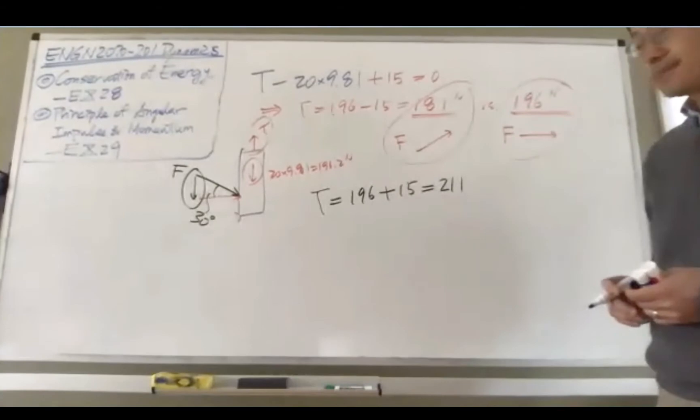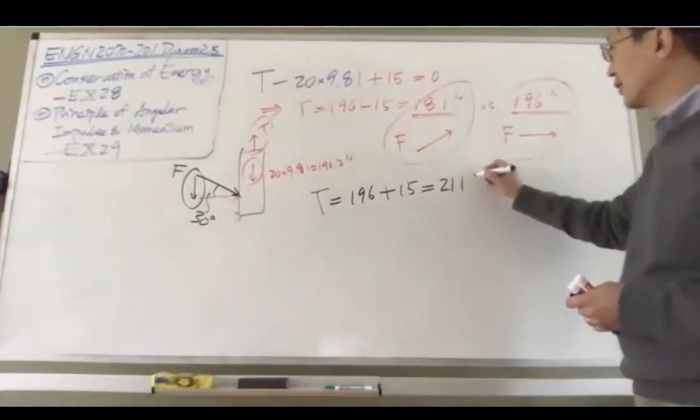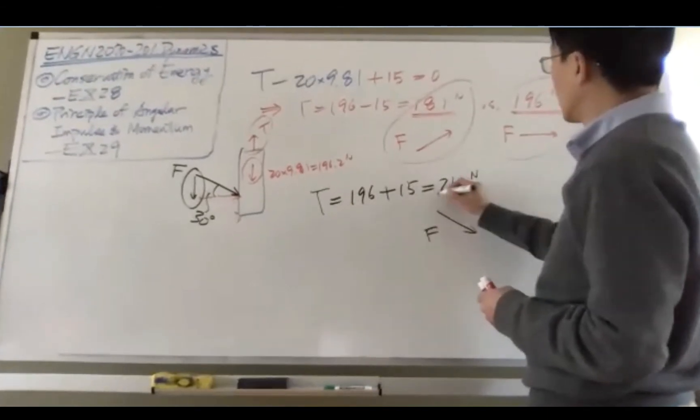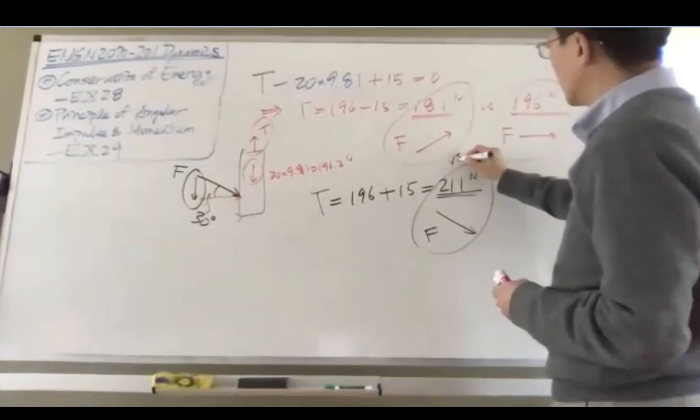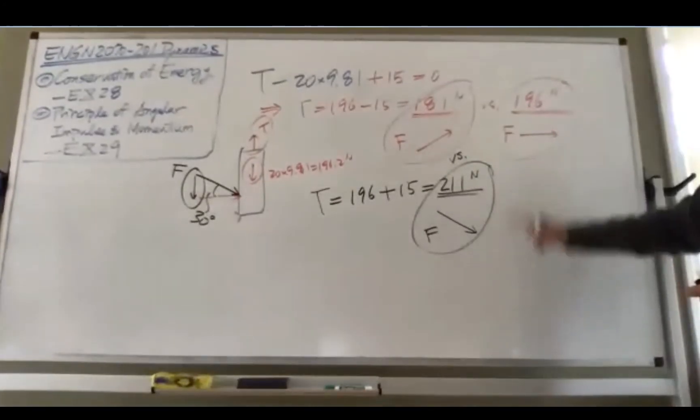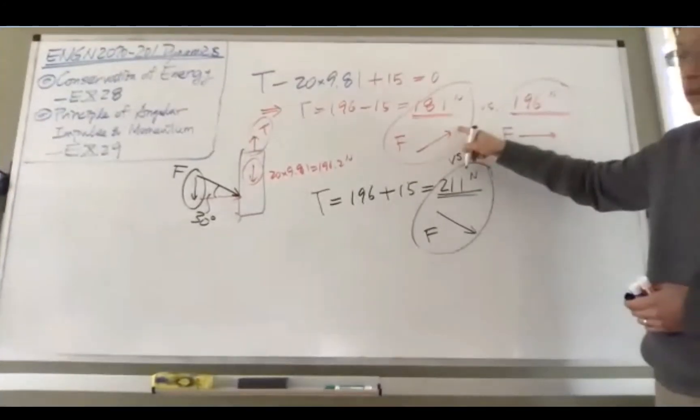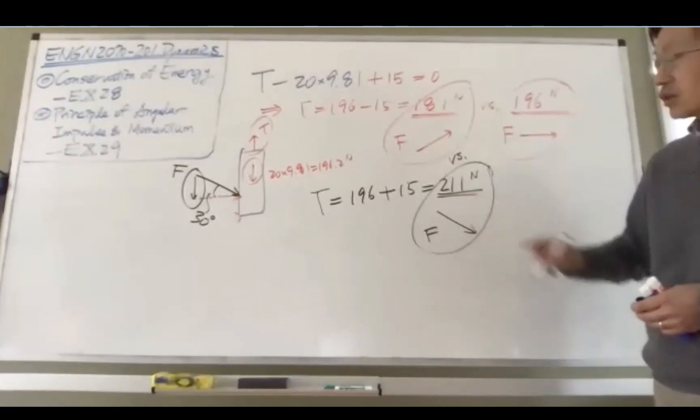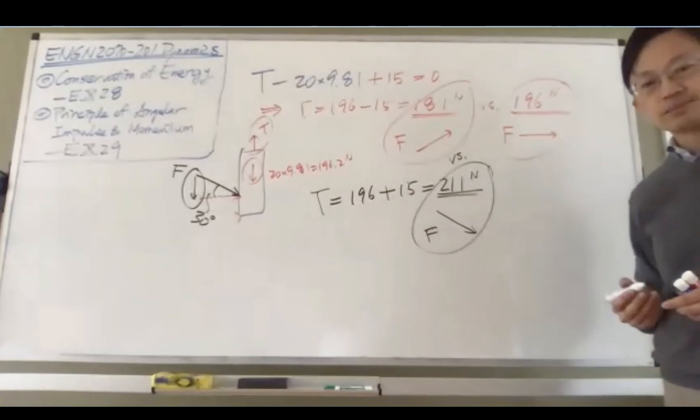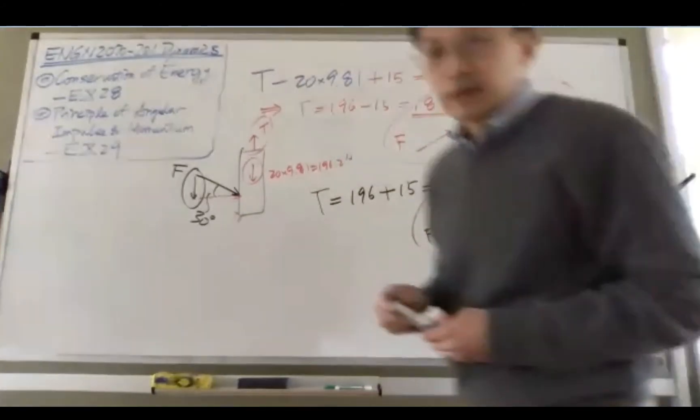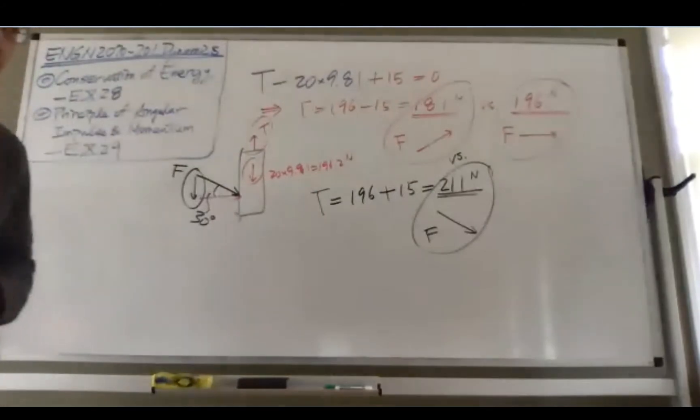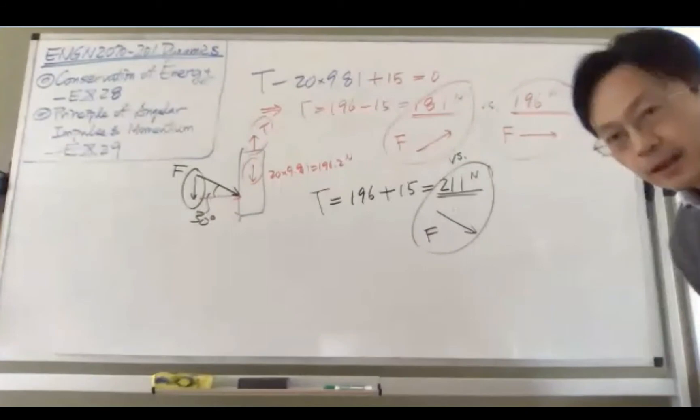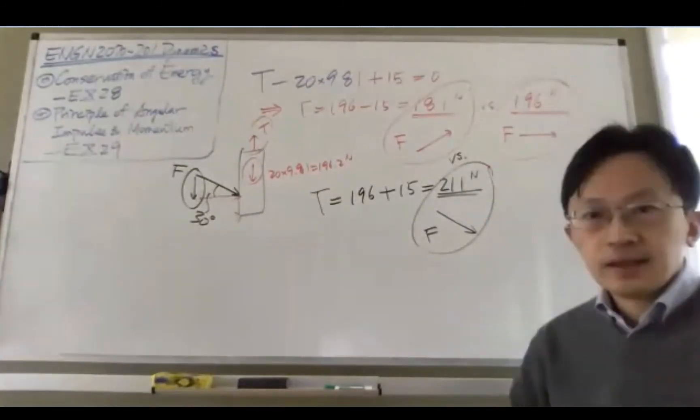So this is the case when the force is applied this way. There are three different cases: horizontal is this value, if the force applies upward is 181, if it applies downward is 211 newtons. Is that clear? Thank you, professor. Now that is clear. Okay, sure. All right.